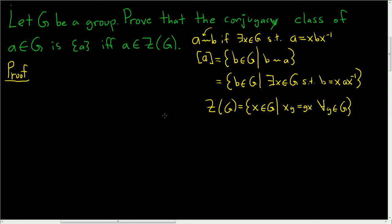Let's go ahead and try to prove this. We have to prove that the conjugacy class of A in G is the singleton set if and only if A is in the center. Let's prove this direction first — I think this is the more careful direction. So suppose that the conjugacy class of A, using this notation, is equal to the singleton set — the set containing just A.